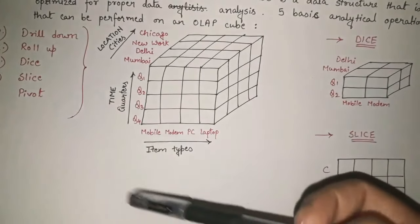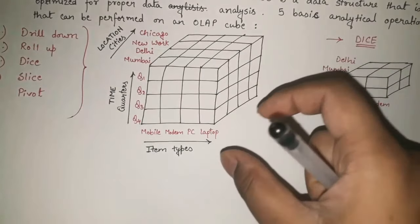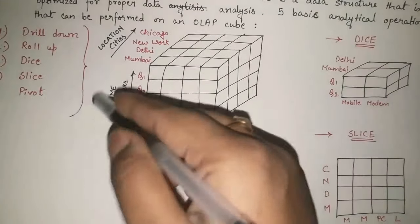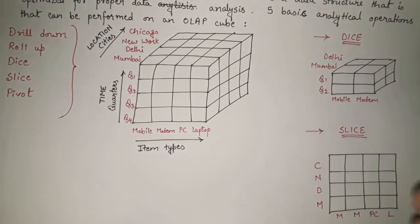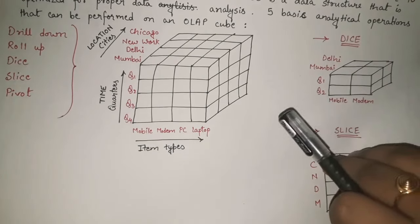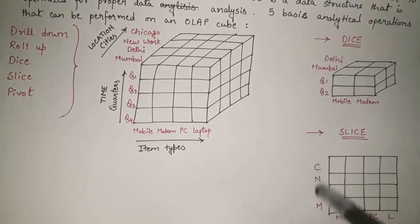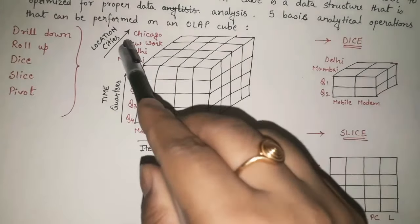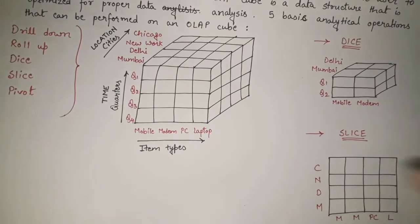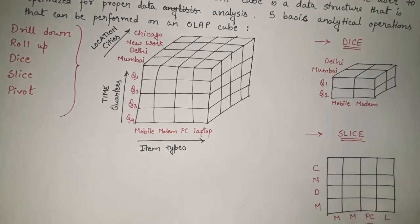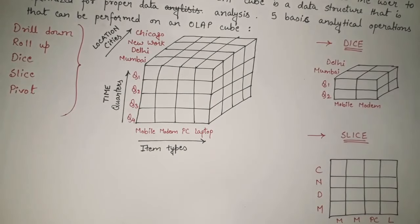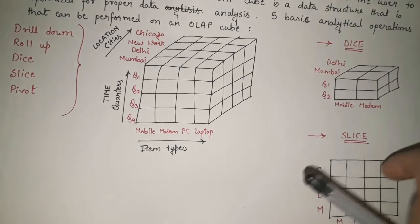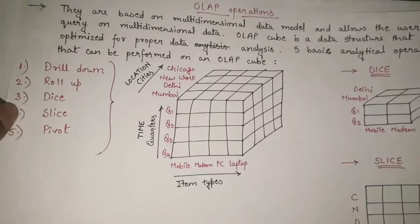The last operation is pivot. Pivot simply means rotate. When data is given to you and you apply pivot, you simply rotate it once. For example, if the locations (C, N, D, M) are on one axis, after rotating once they move to a different axis and the other dimensions swap positions. Pivot is nothing but rotating the given data — the dimensions change positions, nothing else.